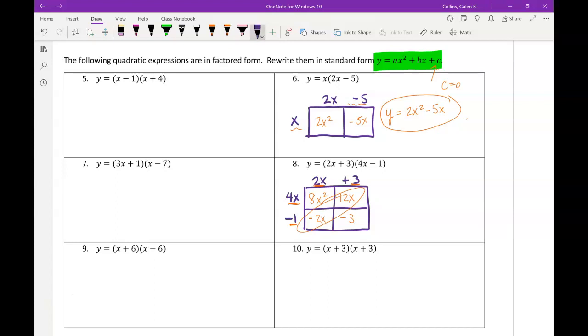So we could write this at first as 8x squared plus 12x minus 2x minus 3. But we want to go ahead and combine those linear terms. So we should end up with 8x squared, 12 minus 2 is 10, so plus 10x minus 3.